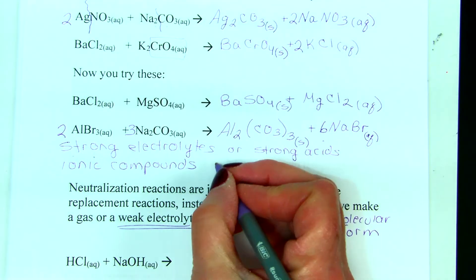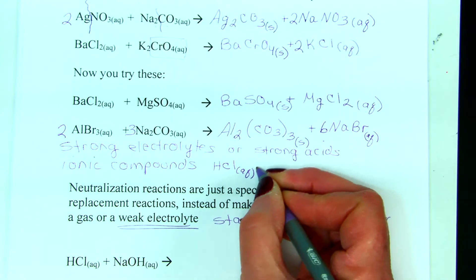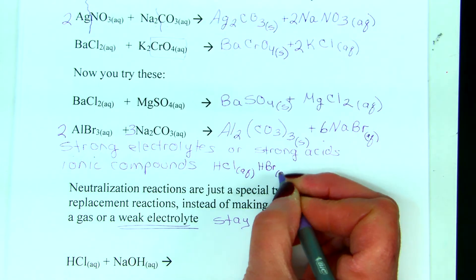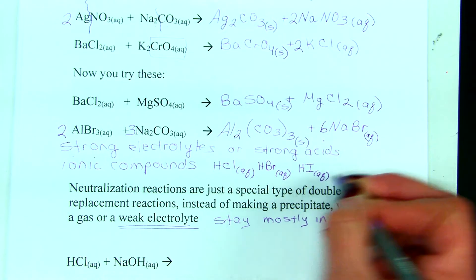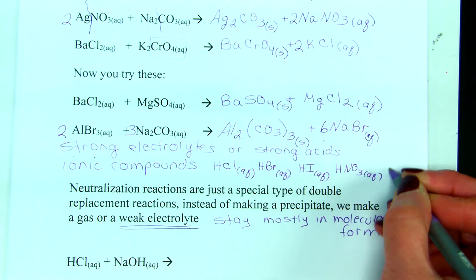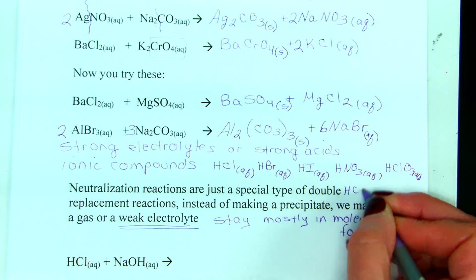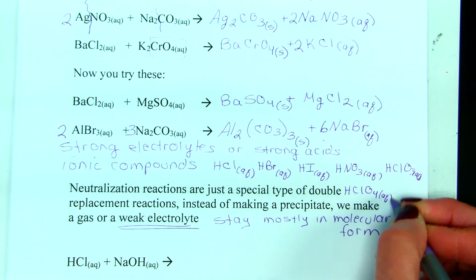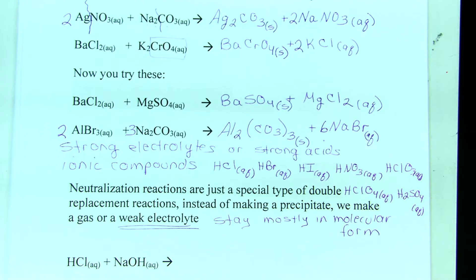So, they are hydrochloric acid, hydrobromic acid, hydroiodic acid, nitric acid, chloric acid, perchloric acid, and sulfuric acid. So, hydrochloric, hydrobromic, hydroiodic, nitric, chloric, perchloric, and sulfuric.